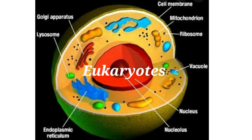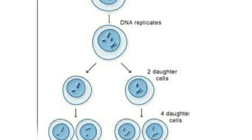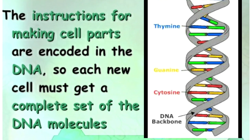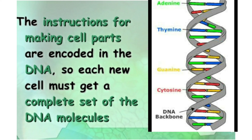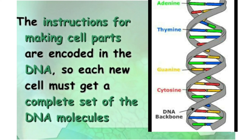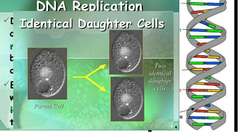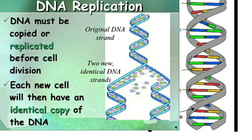The instructions for making cell parts are encoded in the DNA — deoxyribonucleic acid. Each new cell must get a complete set of DNA molecules. DNA replication plays a very important role in cell division; the DNA must be copied or replicated before the cell divides, so that each new cell will have an identical copy of DNA.